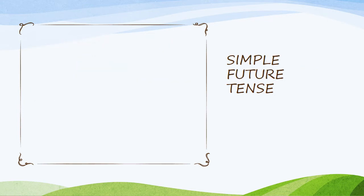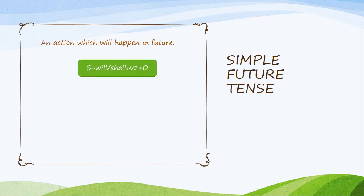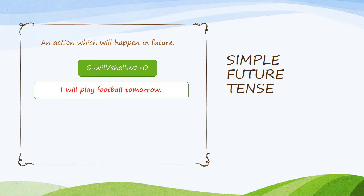Simple future tense — an action which will happen in the future, going to happen only in the future, that means tomorrow. The structure is: Subject plus will or shall plus verb first form plus object. For example: I will play football tomorrow — an action which will happen in the future.